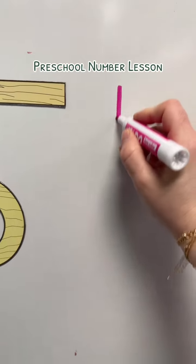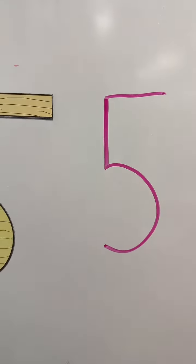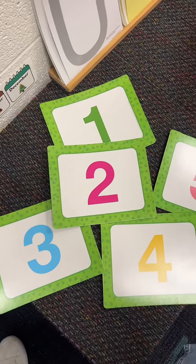You know a preschool lesson is successful if after a 35-plus minute lesson, your students say this was so fun. Here's how I taught the number five.